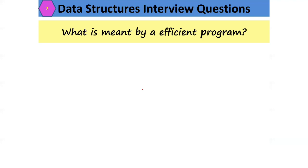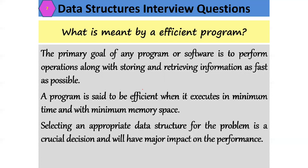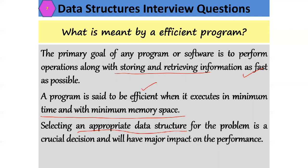What is meant by an efficient program? The primary goal of any program is to perform operations along with storing and retrieving information as fast as possible. An efficient program executes in minimum time and with minimum memory space. To improve efficiency, you need to select the appropriate data structure. Choosing the right data structure is a crucial decision that will have a major impact on performance. Choosing the wrong data structure can cause the program's efficiency to drop.